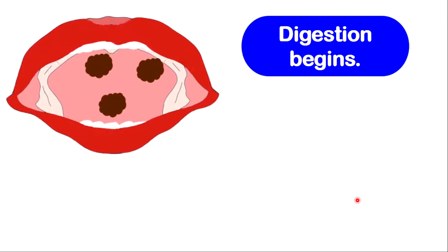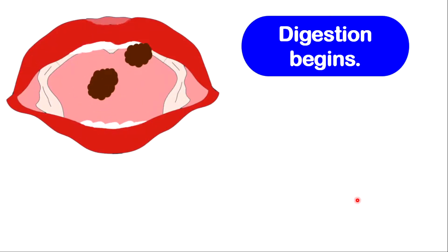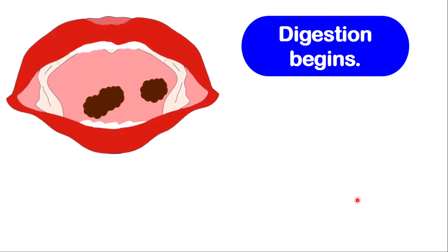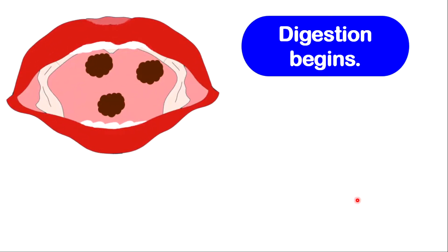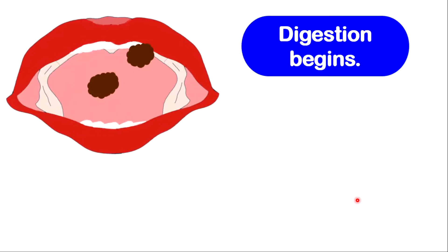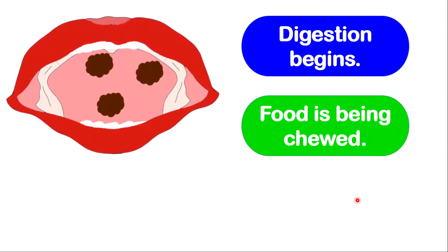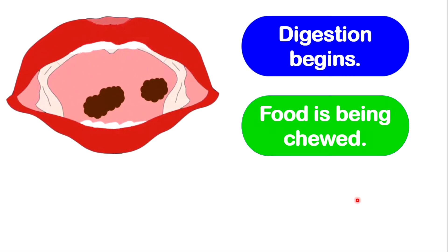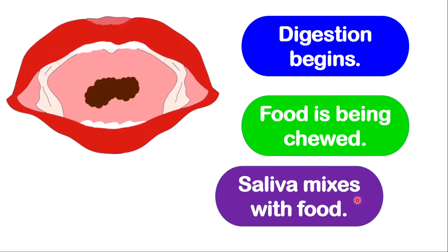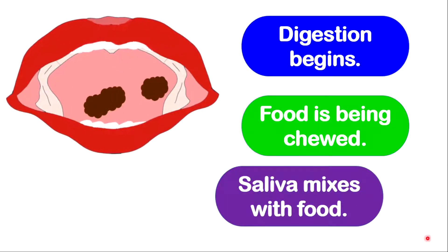Let's start with the mouth. It is very important to note that the mouth is the point where digestion begins. In fact, you have both physical or mechanical digestion and also chemical digestion taking place. The food is being chewed, which is the physical digestion, and saliva mixes with the food.